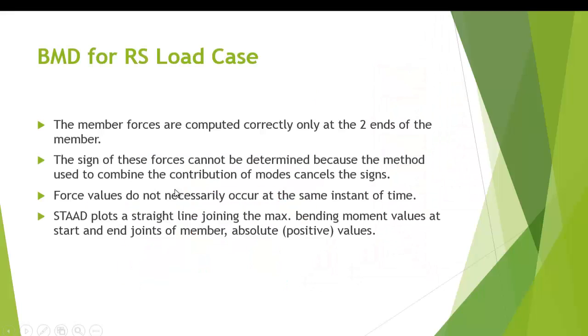What STAAD does is that the member forces are computed correctly only at the two ends of the member, and the signs of these forces cannot be determined because the method uses the combination method like SRSS and CQC methods which will cancel the signs of the values. The maximum force values do not necessarily occur at the same time. STAAD will consider only the maximum force value for that instant of time. And finally, STAAD plots a straight line joining the maximum bending moment values at start and end of the joint of the member, which will be a positive value.